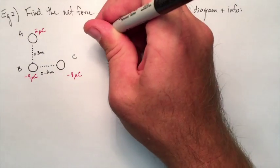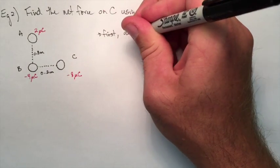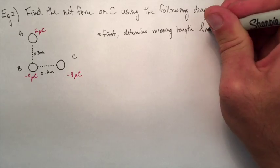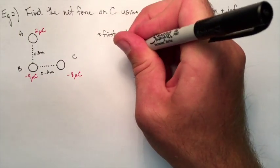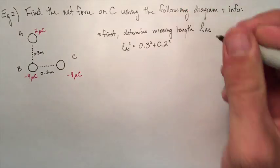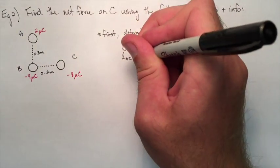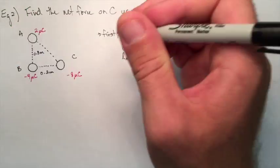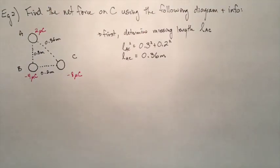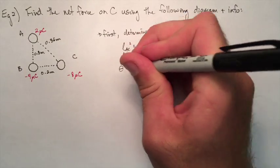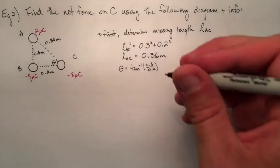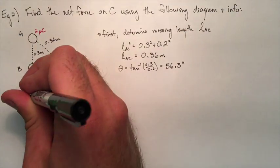So if we're finding the net force on C, pretend we're standing on C, and we have to imagine what kind of attraction or repulsion would we feel from A or would we feel from B. So if C is negative 8 and A is positive 2, C would be attracted to A, and C would be repelled from B because they are both negatively charged. First off, we're going to find the distance here between A and C, which we find out to be 0.36 meters. And later on, we're going to need the angle. We find that to be 56.3 degrees.